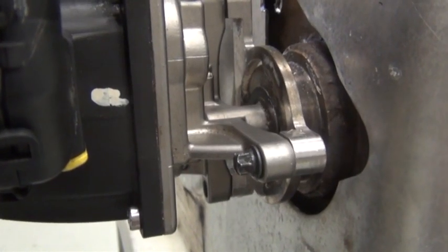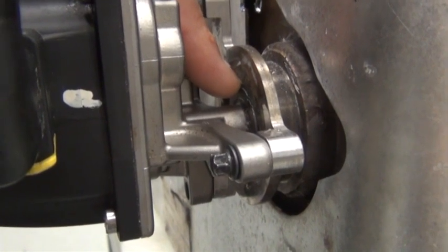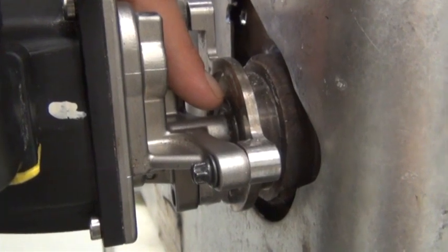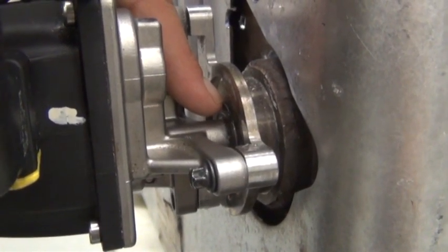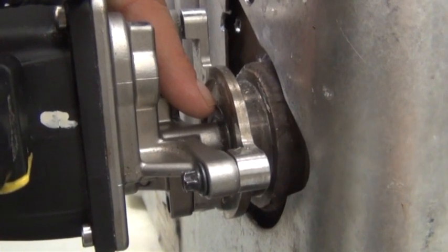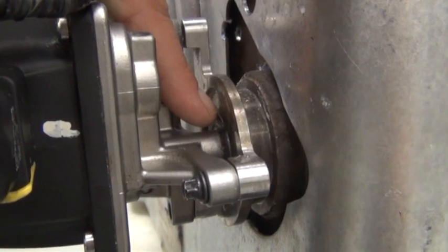The next item in PSL tells you to check the DEF dosing valve at the gasket area to make sure it's not leaking DEF. If it is leaking DEF at this area, then you want to make sure you replace the gasket first and then retest. Don't ever replace the one-box system because it's leaking at the gasket area. Always replace the gasket first.